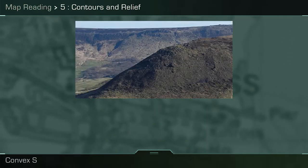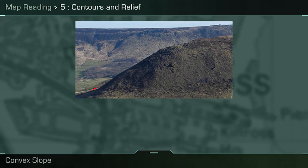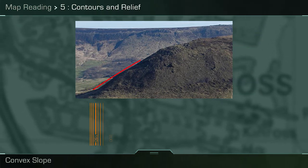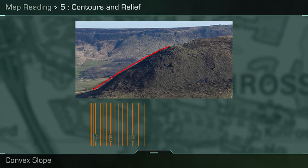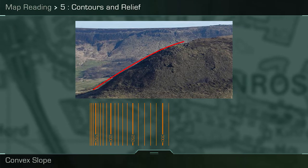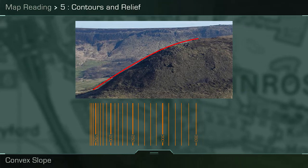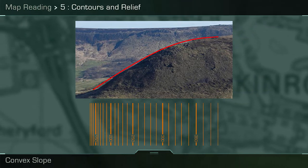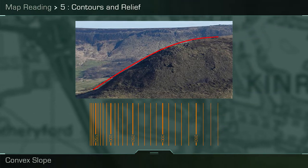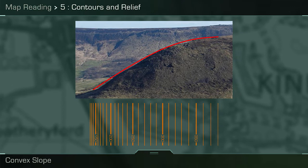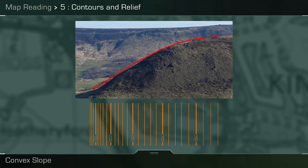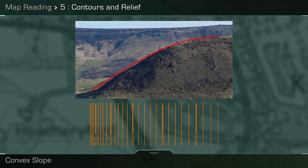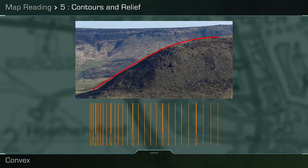If you look at this slope you will see the contour lines start closer together at the bottom, indicating a steeper gradient, and get further apart as you move up the hill. The shape of this slope produces a hump-like line and is called a convex slope.